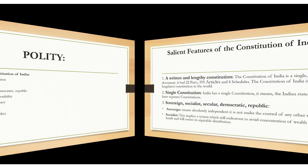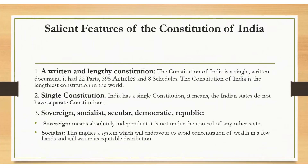Now we go through the explanation. First, it's a written and lengthy constitution. The Constitution of India is a single written document. It had 22 parts, 395 articles, and 8 schedules. The Constitution of India is the lengthiest constitution in the world.